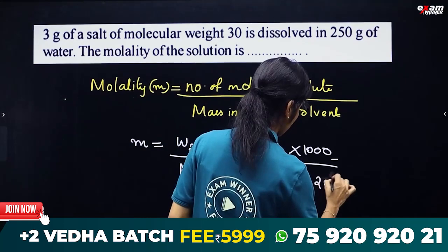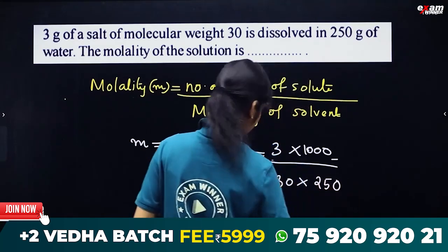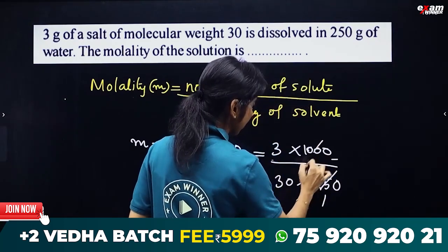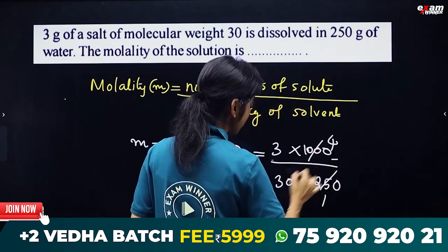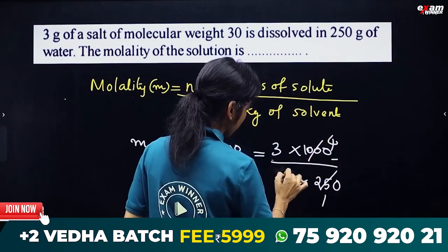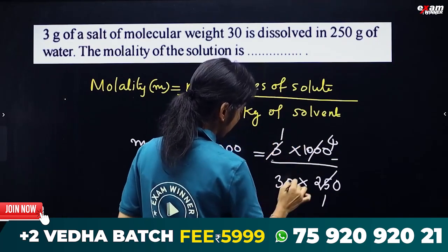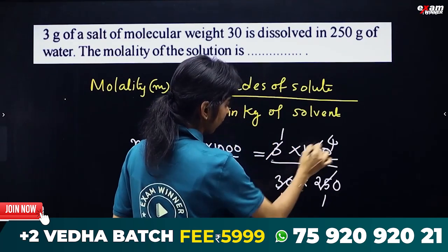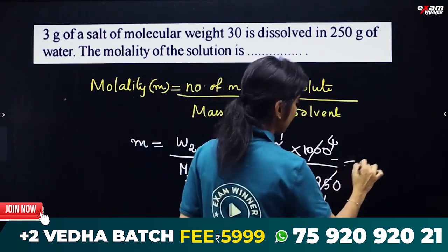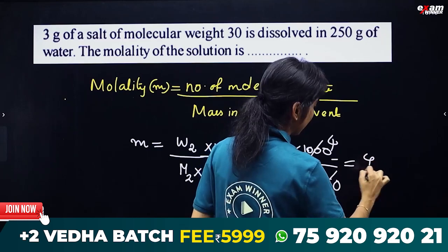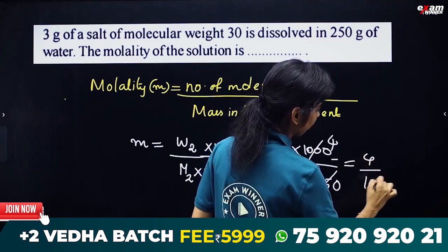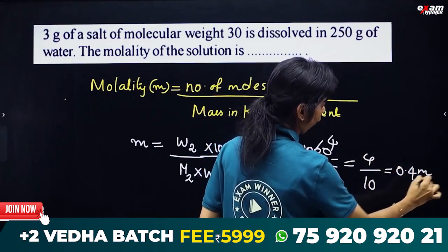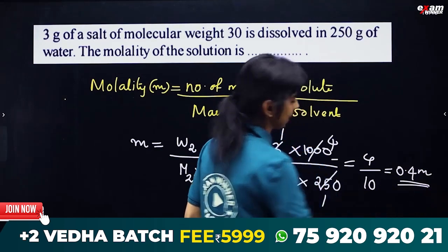We put the values in: 3 grams of solute, molecular weight 30, and 50 grams of water as the solvent. Calculating: 3 divided by 30 gives 0.1 moles, divided by 0.050 kg of solvent. We get 4 by 10, that is 0.4 molality.